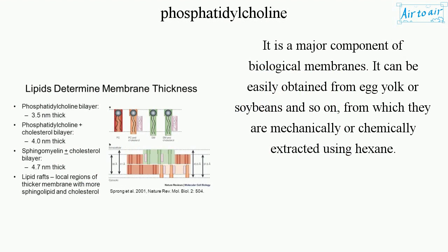It can easily be obtained from egg yolk or soybeans, and so on, from which they are mechanically or chemically extracted using hexane.